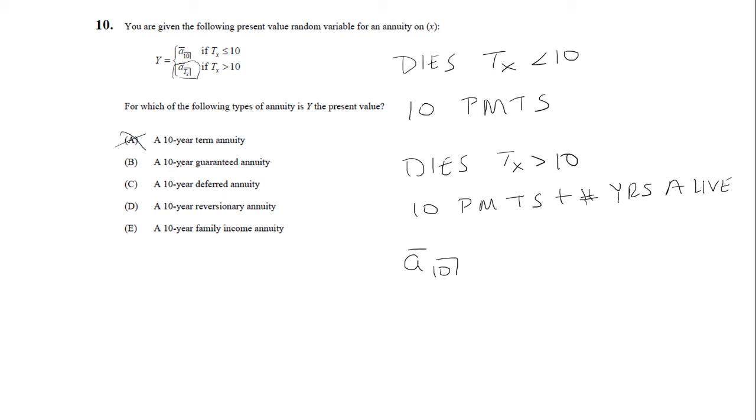Part B says a 10-year guaranteed annuity. As illustrated here, we know there's going to be at least 10 payments, so we're guaranteed at least 10 payments. The answer is B. For C, a 10-year deferred annuity...